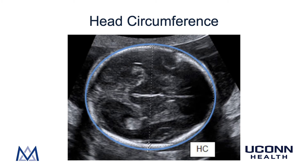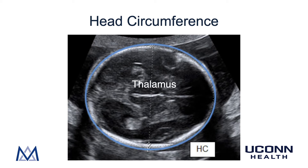The first measurement is head circumference. It is important to measure head circumference in the right plane of the fetal head. In the middle of the ultrasound image, you can see a white line going across — this is the falx cerebri. It is important to have the same amount of fetal brain on either side of the falx cerebri. Surrounding it is a small dark area often referred to as butterfly wings — that is the thalamus. This measurement is taken at approximately the level of the parietal bones, and the head circumference is measured all the way around the outside of the bone.